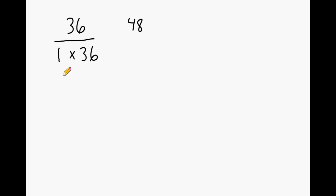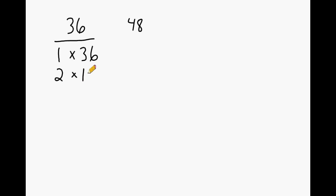We already know that 1 is a factor of all numbers. Then you try to see if 2 is a factor. Because 36 is even, we know that 2 is a factor. 2 can be divided into 36 eighteen times — 2 times 18 is 36. So 1 is a factor and 2 is a factor.